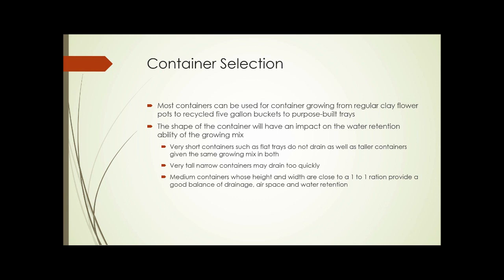What I mean here is that if you have a low, flat container and you fill it with water — water until the soil is saturated — then let the water in the soil drain out, there will be more water retained in the remaining soil than if that container contained the same amount of soil but were taller and narrower. Inversely, very tall narrow containers might drain too quickly. So really ideal containers are medium-sized containers whose height and width are close to a one-to-one ratio. They provide a good balance of drainage, airspace, and water retention.